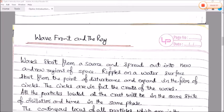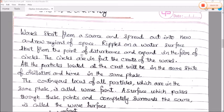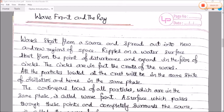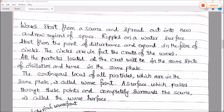So next is our main topic where we are going to study about the wavefront and the rays. We will study about waves in a separate chapter in complete detail with all the characteristics and equations. Now we are studying wavefronts and rays. What is wavefront? When wave starts from source and spreads out into new regions of space, ripple on the water surface starts from the point of disturbance and expands in the form of circles. The circles are in fact the crest of the waves. All the particles located at the crest will be in the same state of oscillation and hence in the same phase.